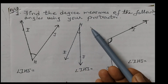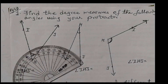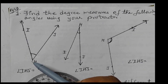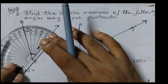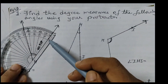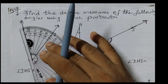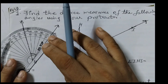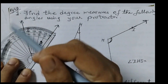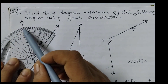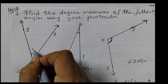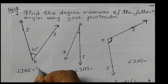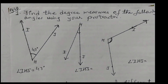We have to take a protractor and place it to measure. This is the center of the protractor and this is the vertex, so we can place it like this — this is our baseline. Now I'll just place it and check the measure. We see here it's 47 degrees. This angle measure is 47 degrees; angle IHJ is 47 degrees.